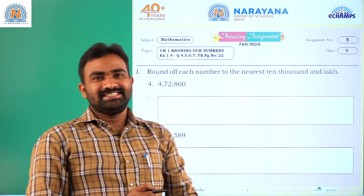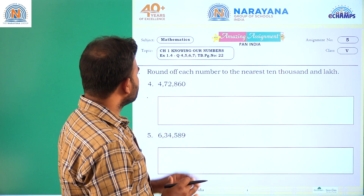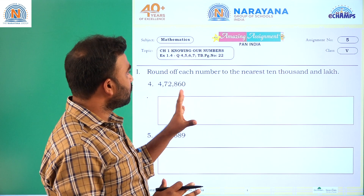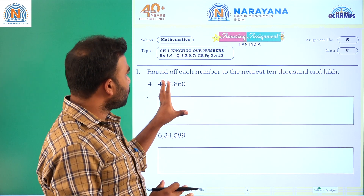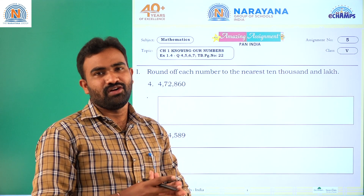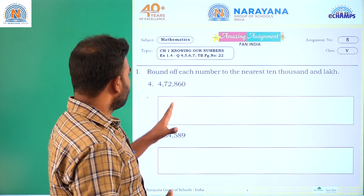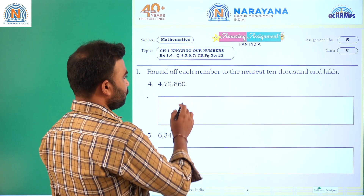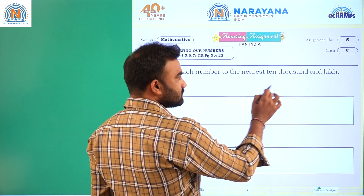Hello children, welcome to Nara and Alive Classes. Today's amazing assignment is on Chapter 1, Knowing Our Numbers, Exercise 1.4. Let us have a look at our amazing assignment today. First one: round off each number to the nearest ten thousand and lakh.